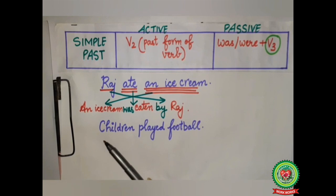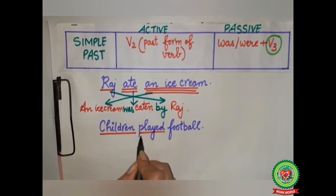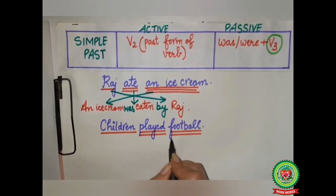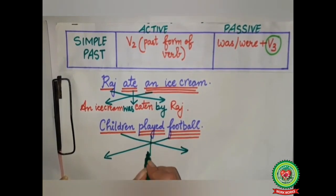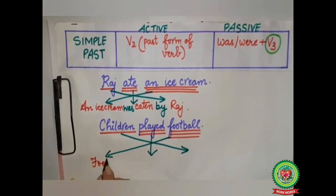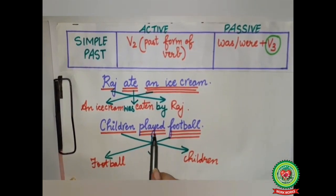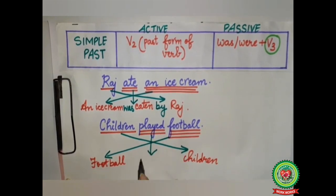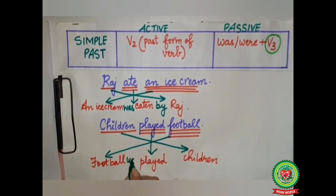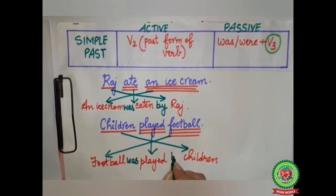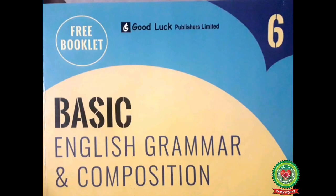In the second sentence: 'Children played football.' Children — subject, single underline. 'Played' — double underline. Football — triple underline. Football will come in the beginning, children will go to the last. 'Played' is already in its V3 form so it will remain 'played.' Football is singular so we will use 'was.' The sentence becomes: 'Football was played by children.'